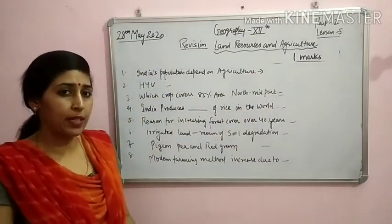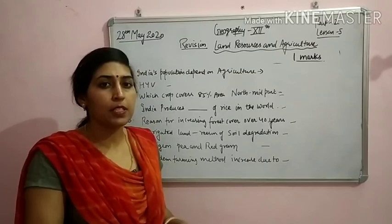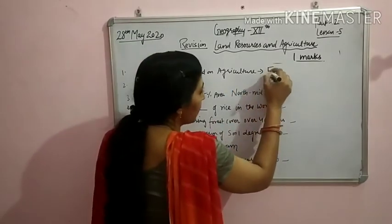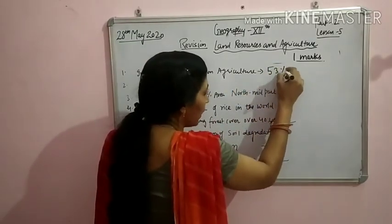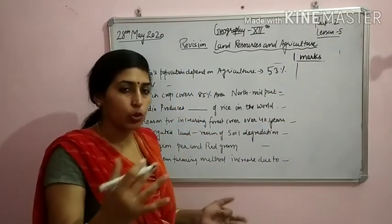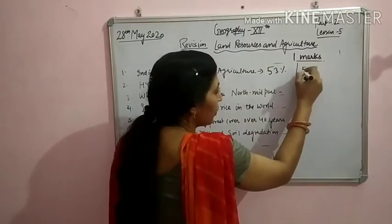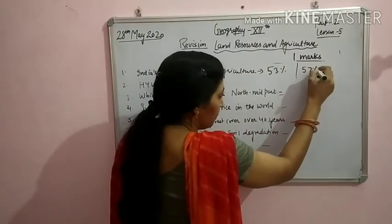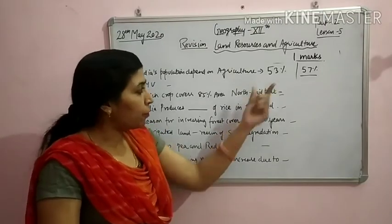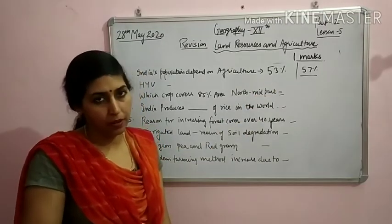Today we start with different MCQs. India's population depends on agriculture — when we studied this chapter, we read that 53% of India's population is dependent on agriculture. And if we talk about area, 57% of the total land is covered for cropping, while 53% of India's population depends on it.